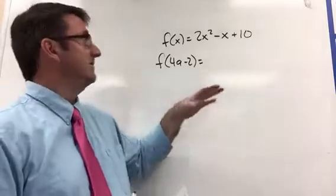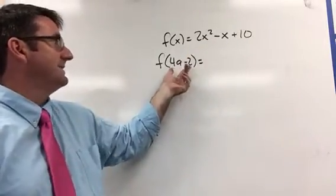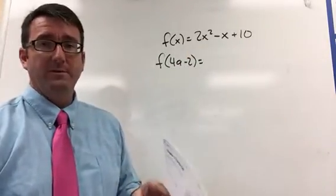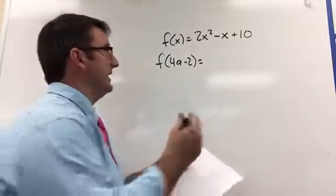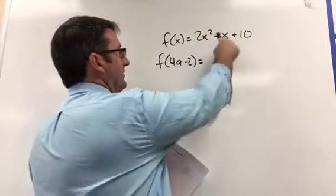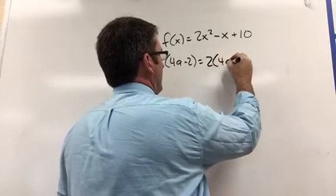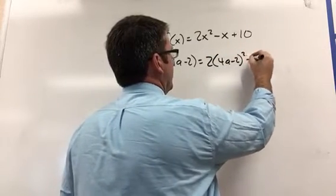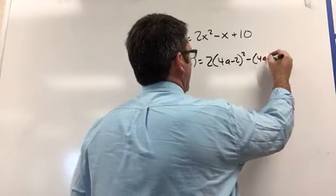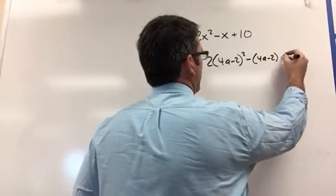In other words, we're asked to evaluate the function at x equals 4a minus 2. So what we're going to do is just plug in 4a minus 2 for our x's here. So we get 2 times 4a minus 2 squared minus 4a minus 2 plus 10.